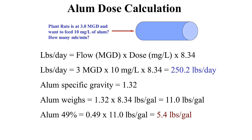The first thing you want to do is write down the formula: pounds per day equals flow in million gallons per day, times milligrams per liter, times the constant 8.34. Then we plug in our flow of 3 MGD and our dose of 10 milligrams per liter. Multiplying that out, we get a 250 pounds per day feed rate — for any treatment chemical at 3 MGD and a dose of 10 milligrams per liter.